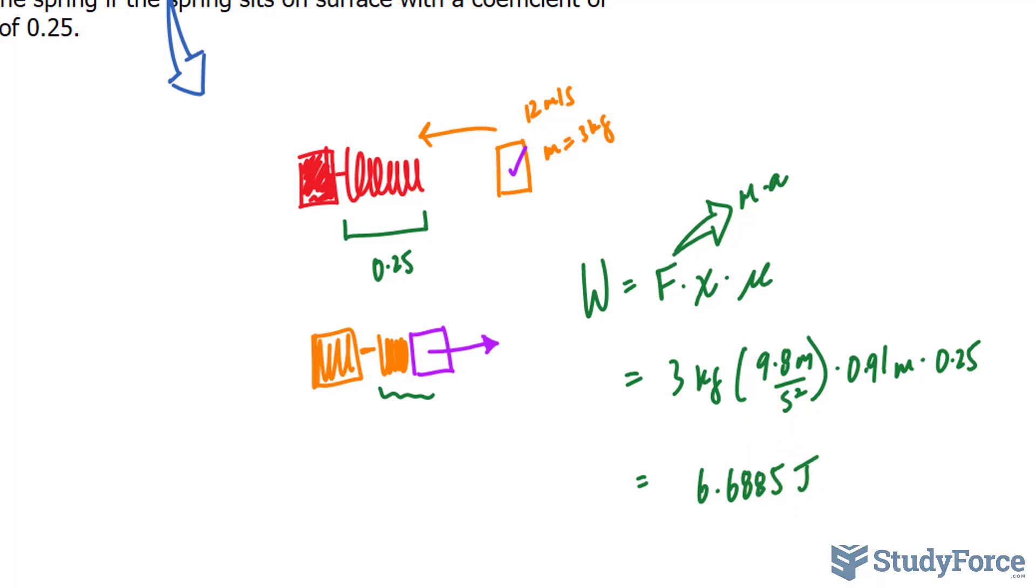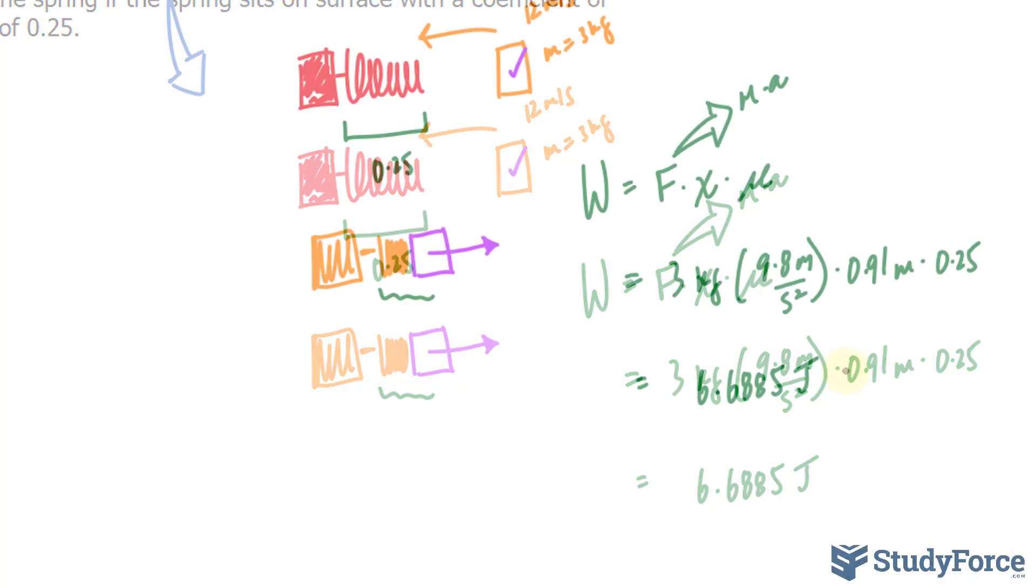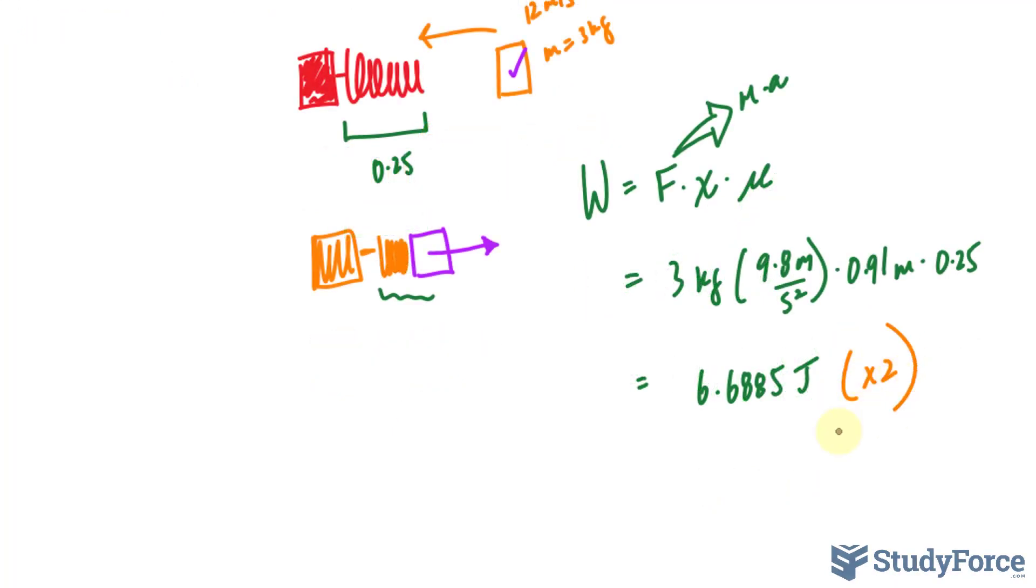Like I said, this is happening twice. The first time it pushes the spring, and then again after the spring pushes that mass. Therefore, we will be multiplying this value by 2.